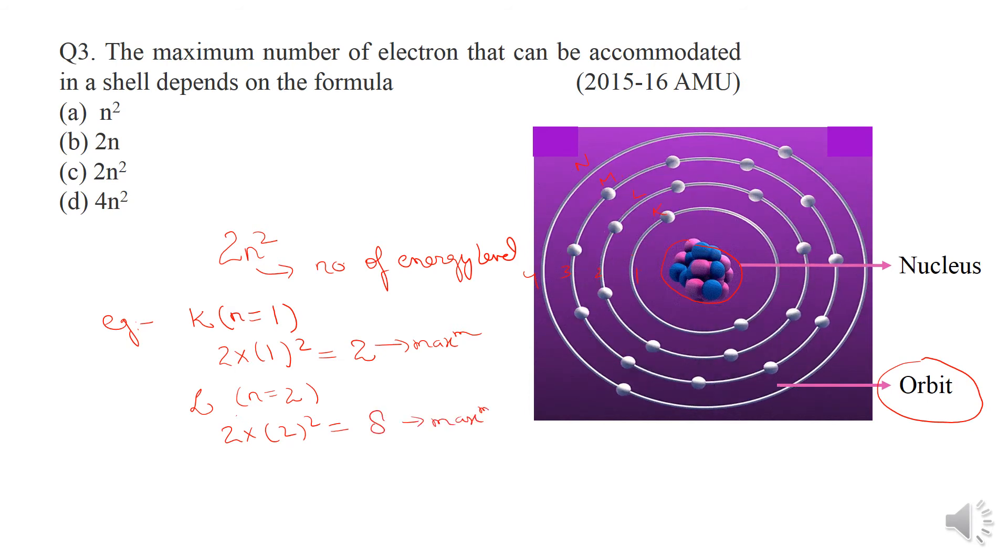So 2nd shell, maximum number of electrons is 8. Similarly you can calculate for M and N shells. According to this, our answer is 2n square.